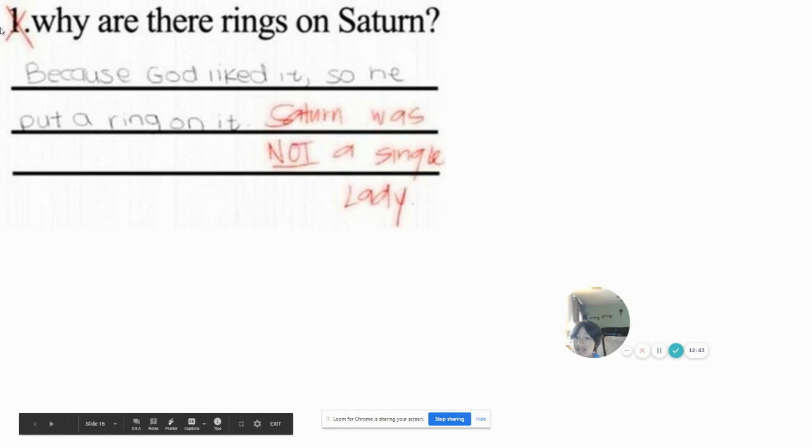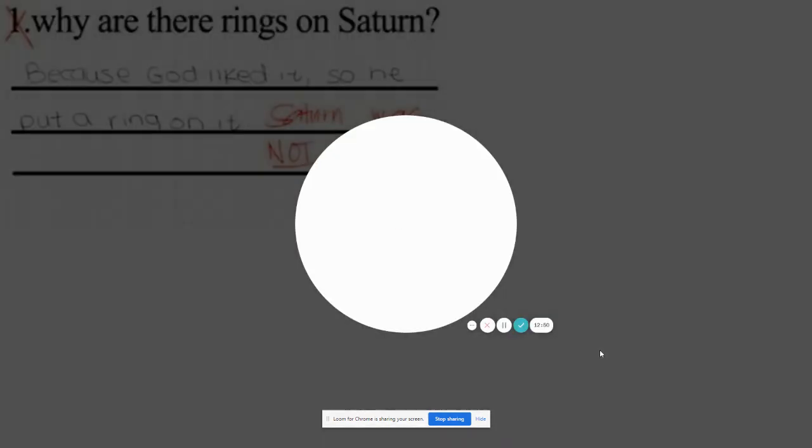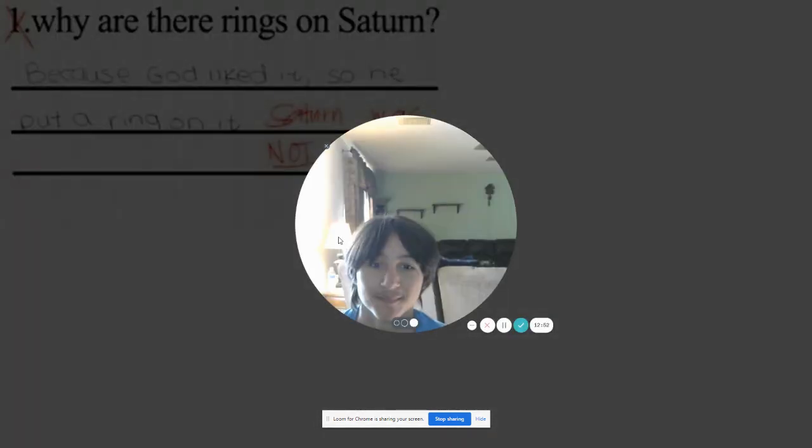Why are there rings on Saturn? Because, like, God liked it. So, he put a ring on it. Saturn was not a single lady.